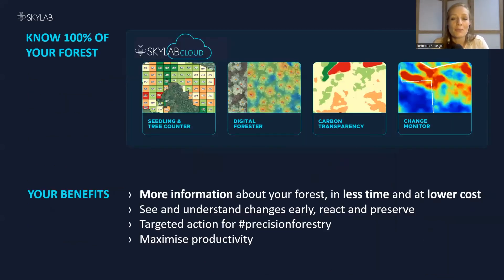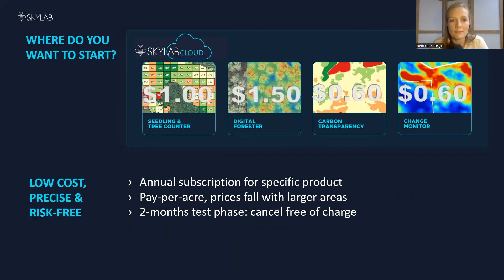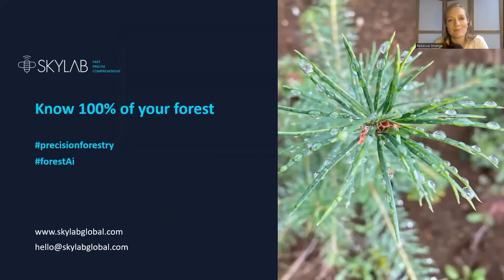In summary, our precise, comprehensive maps give you more information about your forest in less time and at a lower cost. You can see and understand the changes that are happening and react to them early, take targeted action where it's needed, and maximize your productivity and efficiency throughout all stages of the growth cycle. We normally offer an annual subscription contract, which includes a two-month free test phase for new customers, meaning you can trial our products completely without risk and cancel the contract free of charge if you're not happy. You pay per acre for the analysis results, with reduced prices for larger areas. Thank you very much for listening.